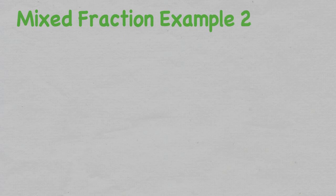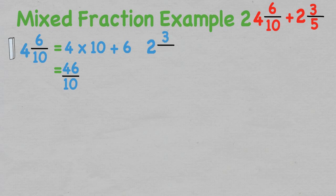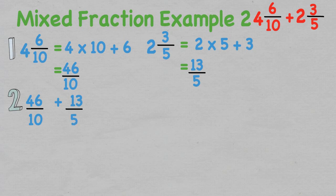Looking at another example with two mixed fractions: four and six over ten plus two and three over five. We need to change both mixed fractions into improper fractions. For the first fraction, four and six over ten, we multiply the whole number by the denominator and add the numerator, which leaves us with 46 over ten. For the second fraction, two multiplied by the denominator five and add the numerator three, leaving us with 13 over five.